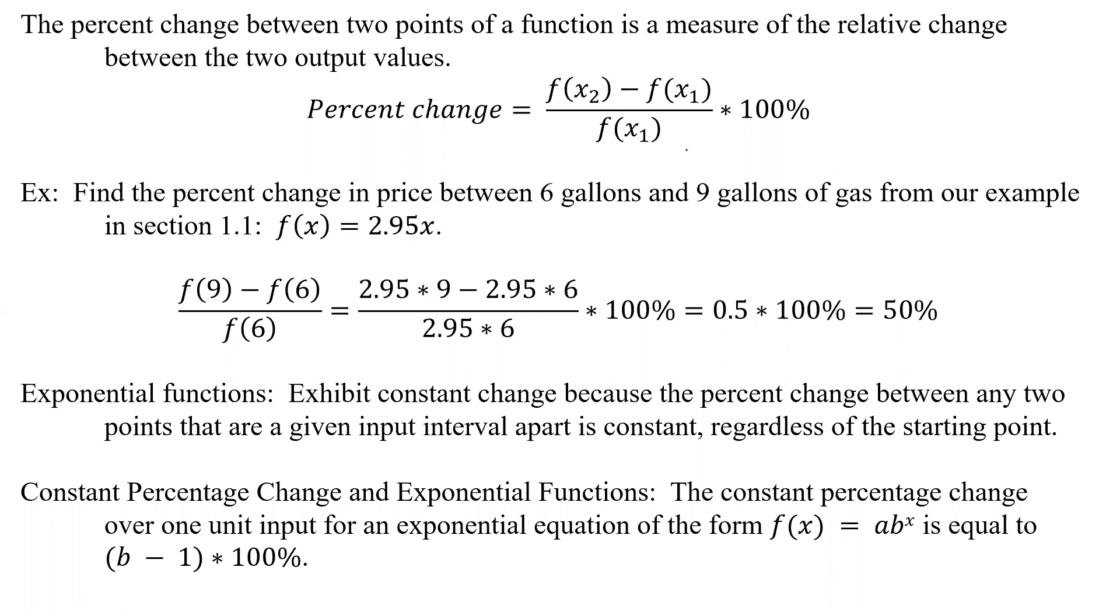And so if we look at an example, let's say we go all the way back to section 1.1 where we had the gas and it was f of x equals 2.95x. We want to find the percent change in price between six gallons and nine gallons. Well, what do we do? Well, we have to first find f of x2. Well, this is probably what we're going to call x1. And this is going to be x2. And so we find f of x2. So we plug in nine here and that gives us this first part f of nine. And then we're going to subtract off f of x1, which was the six.